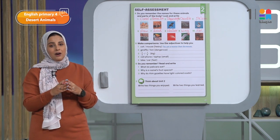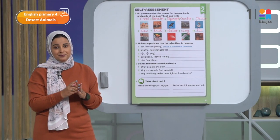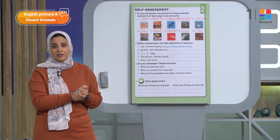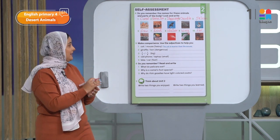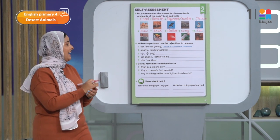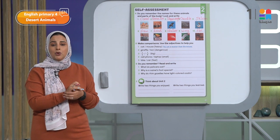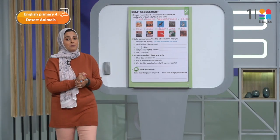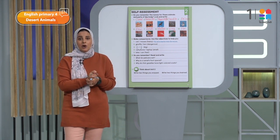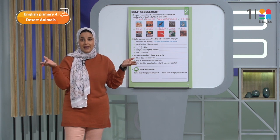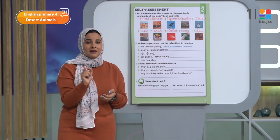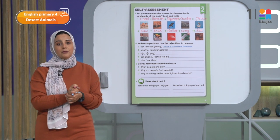How brilliant you are — I am so proud of you. Let's write the words in our books and look again at question number five. Remember the adjectives that we talked about — do you remember the comparative form? Comparative comes from the word 'compare' — يعني بقارن ما بين اثنين. وقلنا إن فيه شوية rules لازم نتباعها لما نيجي نعمل الcomparative form.